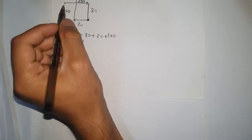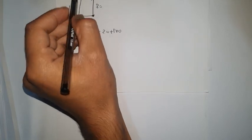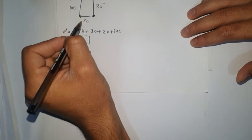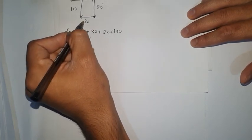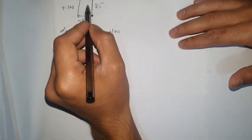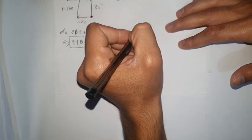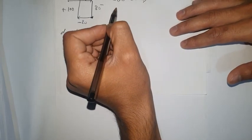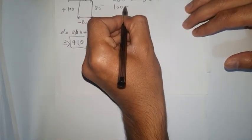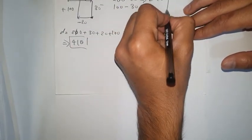Now we're going to find the displacement. For displacement, we look at which direction this guy traveled. The 260 is in the positive x direction, the 30 is in the negative y direction, the 20 is in the negative x direction, and the 100 is positive because it's above — north on y. So for x: 260 minus 20 equals 240, and for y: 100 minus 30 equals 70.